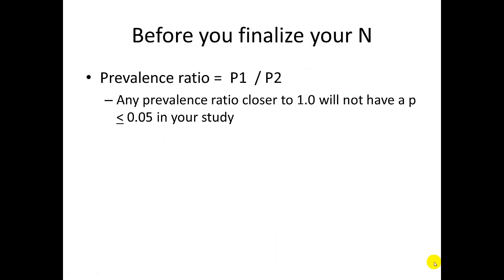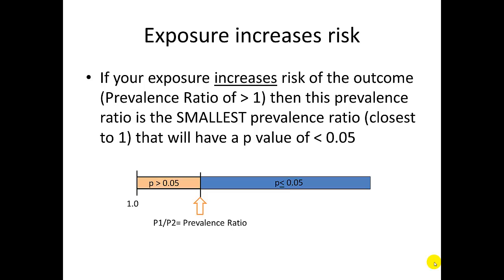Before you finalize your sample size, you should first understand that the final prevalence ratio in your study is equal to P1 divided by P2. This is the prevalence ratio closest to 1 that you will be able to detect in your study. If your exposure increases risk of the outcome, it would have a prevalence ratio of 1 or greater. Then this is the prevalence ratio that's the smallest one or closest to 1 that will have a p value of less than 0.05. Any prevalence ratio closer to 1 will not be statistically significant.